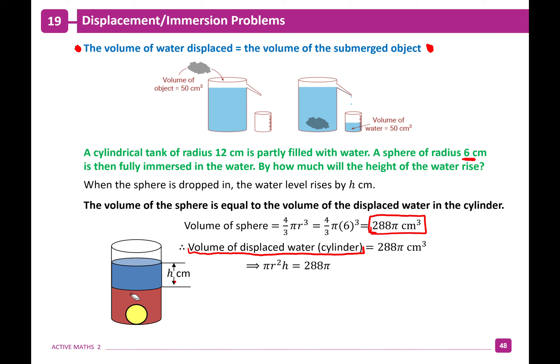We want to find h, the height. Substituting in the radius of the tank, which is 12 centimeters, and cancelling the π's, we get 12² × h = 288. That gives us 144h = 288. Dividing both sides by 144, h = 288 ÷ 144 = 2 centimeters.